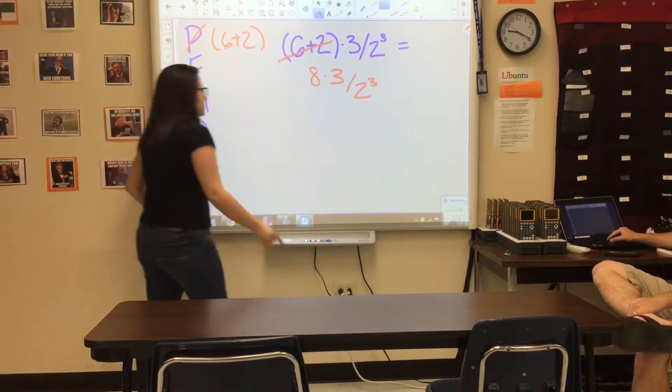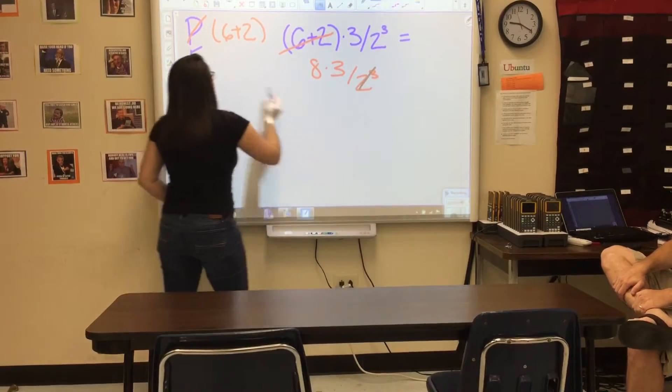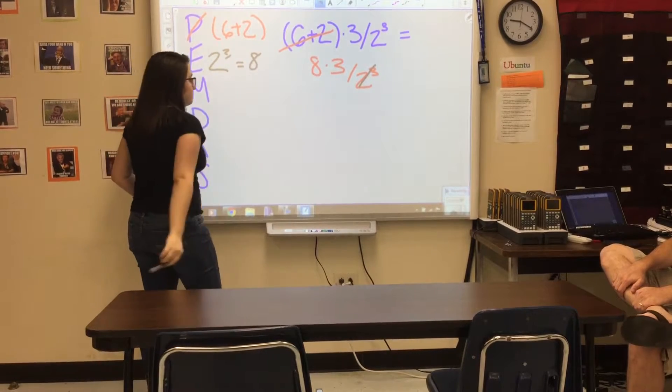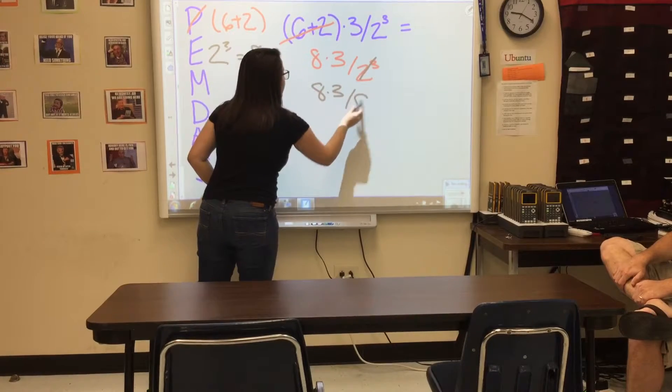Next thing we're going to do is simplify the exponents we have, and we do have 2 to the third. 2 to the third is equal to 8. So what we're going to do is bring that down to 8 times 3 divided by 8.